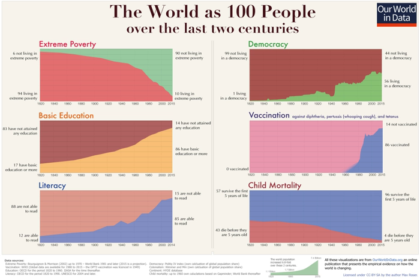Our World in Data is commonly cited by scientists in academic journals like Science, Nature, the Quarterly Journal of Economics, the Proceedings of the National Academy of Sciences, the British Medical Journal, and many other scientific journals.